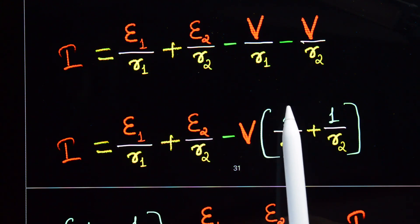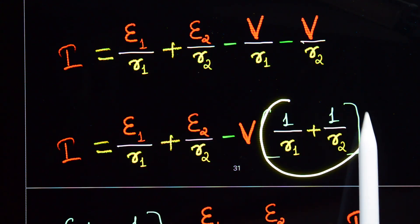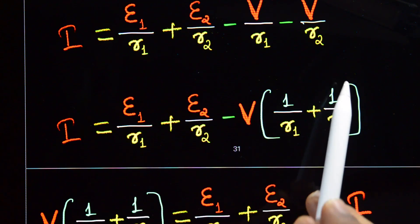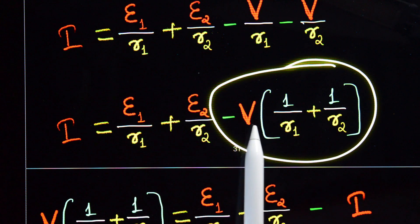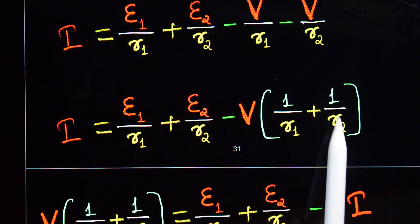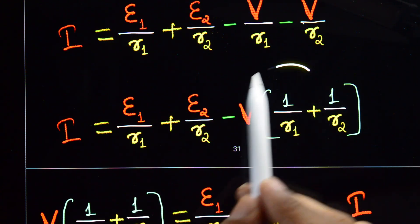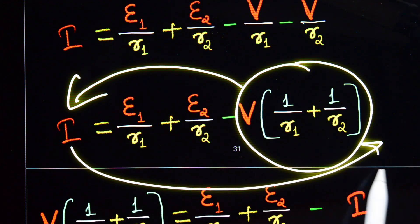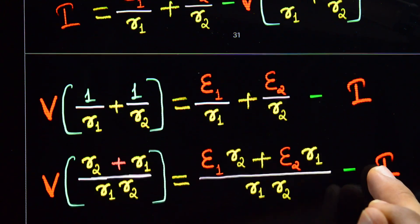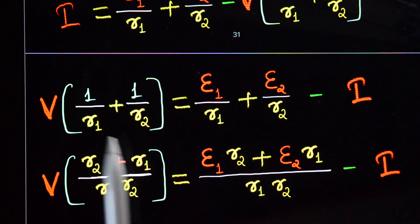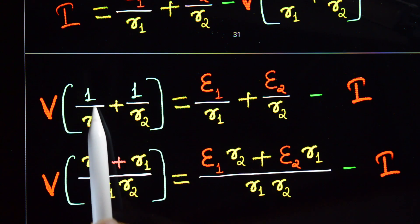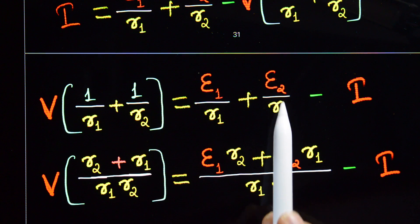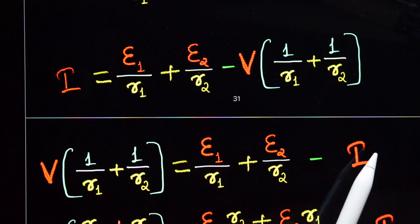Rearranging: v·(1/r1 + 1/r2) = e1/r1 + e2/r2 - i. The left side has v multiplied by (1/r1 + 1/r2), and the right side is e1/r1 + e2/r2 minus i.